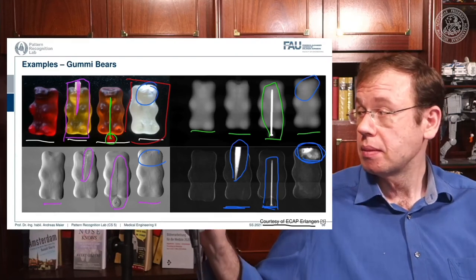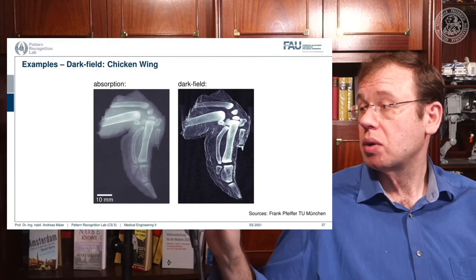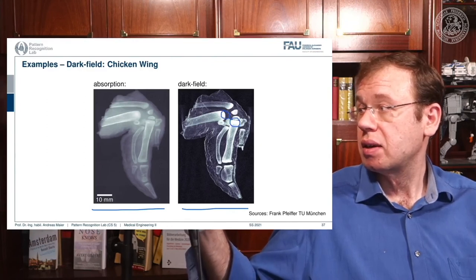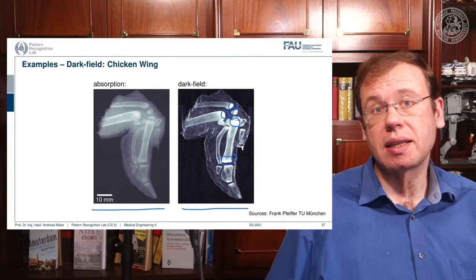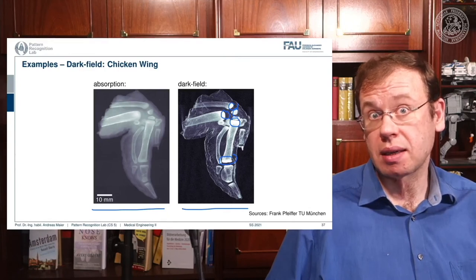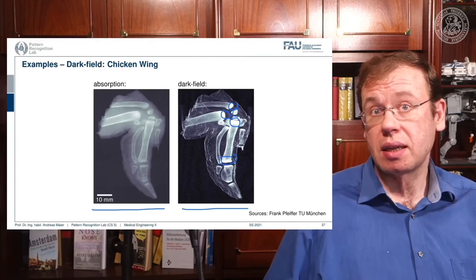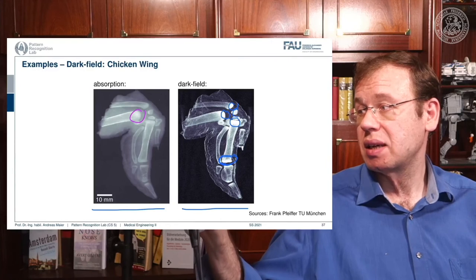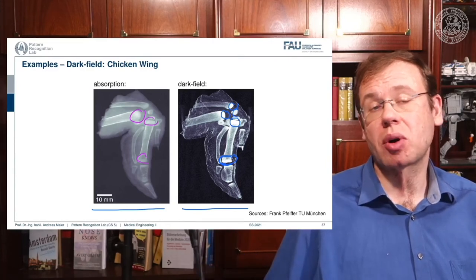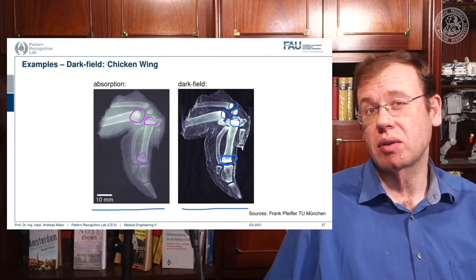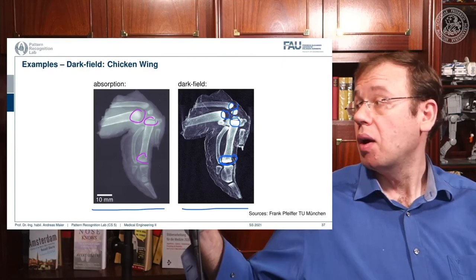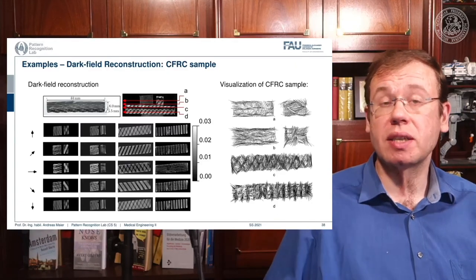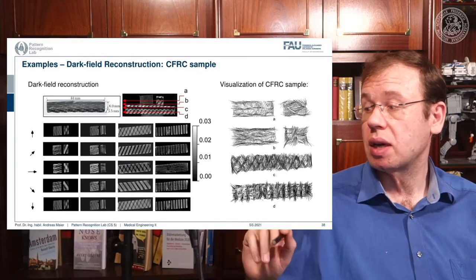There's also the idea of using dark field for osteoporosis: the absorption image and dark field image show very high signals, and it is believed this may relate to the small lacunae where osteoblasts live — when they stop producing bone material, these holes enlarge and may introduce scattering. However, since bones are dense, it's not entirely certain whether this is related to beam hardening, so we see signal but aren't fully convinced it's a game changer for osteoporosis. Additionally, we can reconstruct fiber orientations from the dark field.